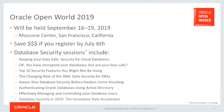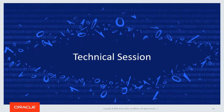Oracle OpenWorld 2019 will be held September 16th through 19th at the Moscone Center. You can save money by registering by July 6th. Security sessions include cloud security, encryption, the top 10 security features, the changing role of DBAs in security, and a presentation by Senior VP Vipin on database security innovation in 2019.